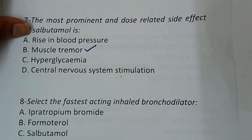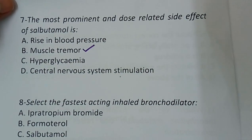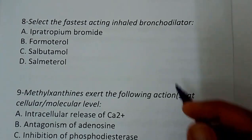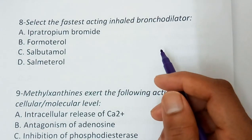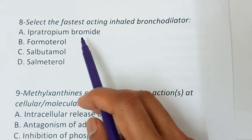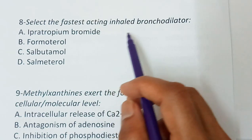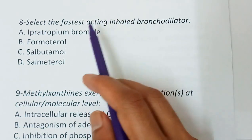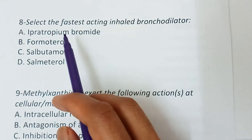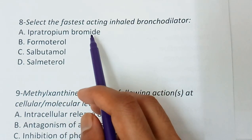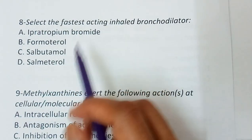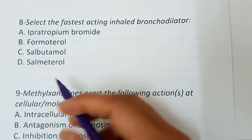These are some important multiple choice questions. You have to study the chapter very well before attempting these. Question number eight: Select the fastest acting inhaled bronchodilator — ipratropium bromide, formoterol, salbutamol, or salmeterol. The correct answer is salbutamol.